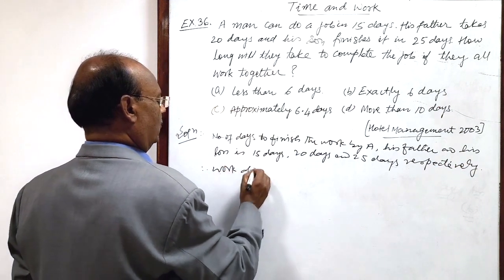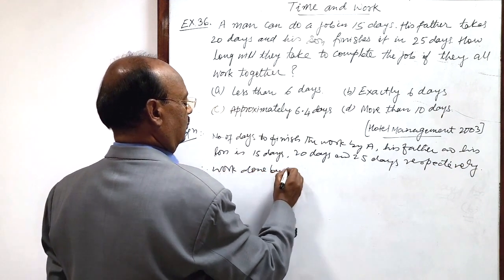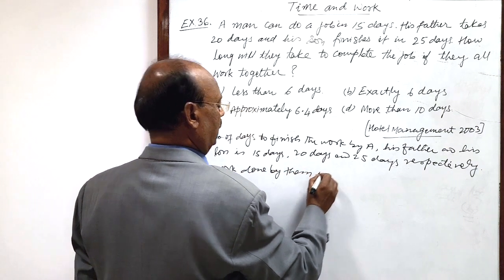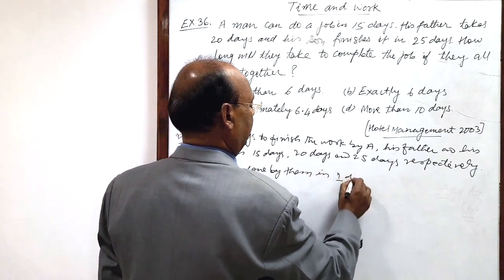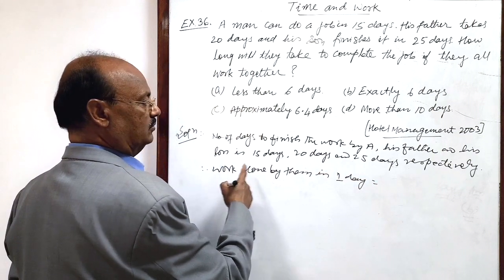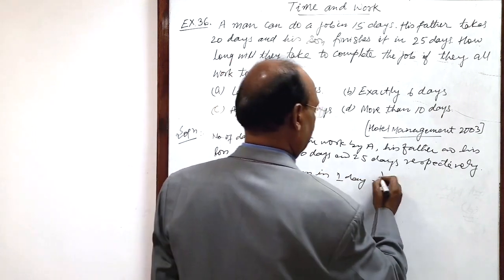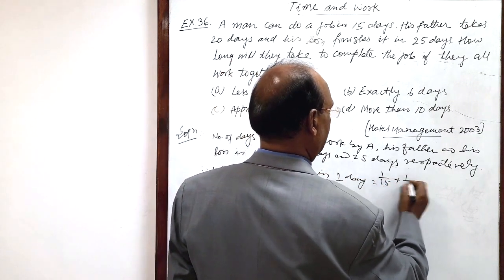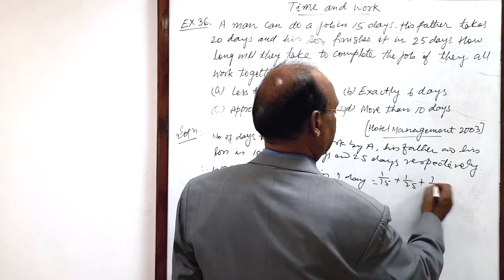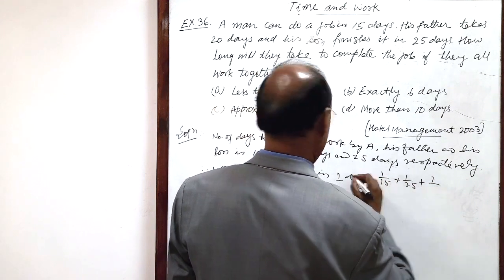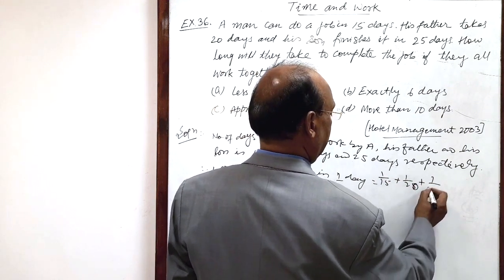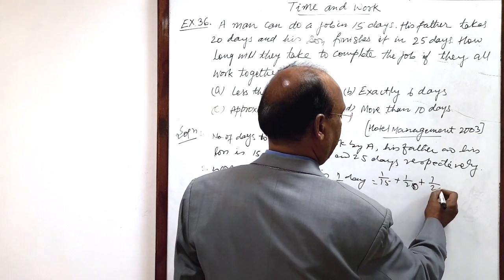Therefore, work done by them in one day will be sum of the reciprocals of these three numbers. So, 1 by 15 plus, 1 by 15 plus 1 by 25 plus 1 by, sorry, 1 by 20 plus 1 by 25.